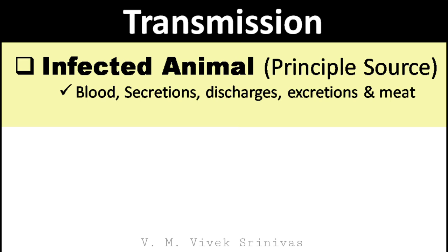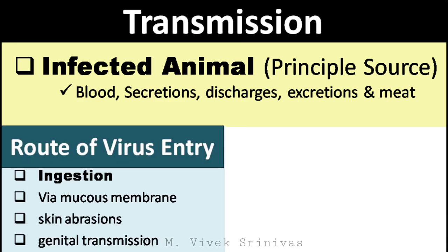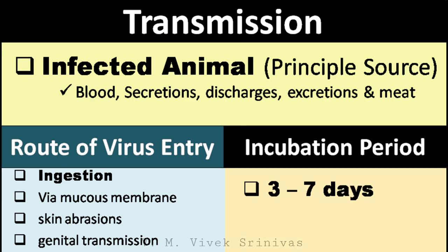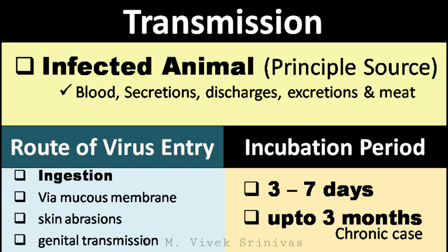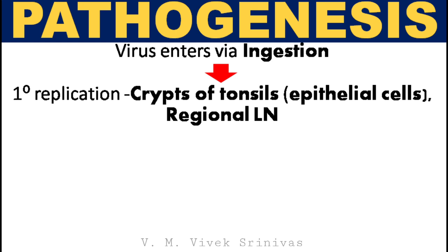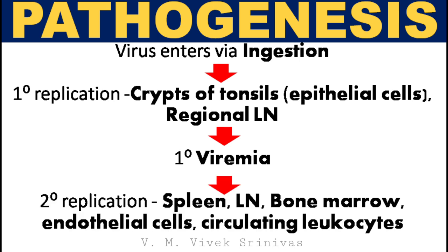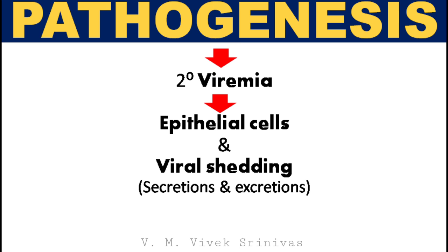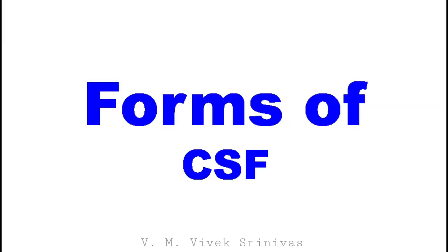Regarding transmission, blood, secretions, discharges, excretions, and meat from infected animals can act as the principal source of this virus. The portal of entry is primarily through ingestion, and also through conjunctival mucous membrane, skin abrasions, genital transmission, and insemination. The incubation period is on average 3 to 7 days for acute cases, but may extend up to 3 months in chronic infections. Following entry through ingestion, the virus initially replicates in the epithelium of the crypts of tonsils and regional lymph nodes, followed by viremia. Secondary replication occurs in lymphoid organs such as spleen, lymph nodes, bone marrow, endothelial cells, and circulating leukocytes, with subsequent viral shedding through secretions and excretions.